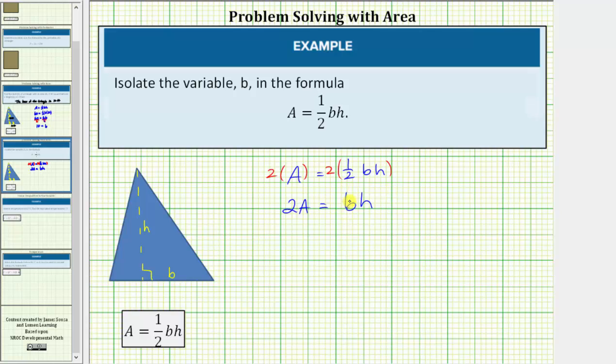Again, our goal is to solve for the variable B. BH means B times H. And therefore, to isolate B, we need to undo this multiplication by performing the opposite or inverse operation. And because we're solving for B, the next step is to divide both sides by H.